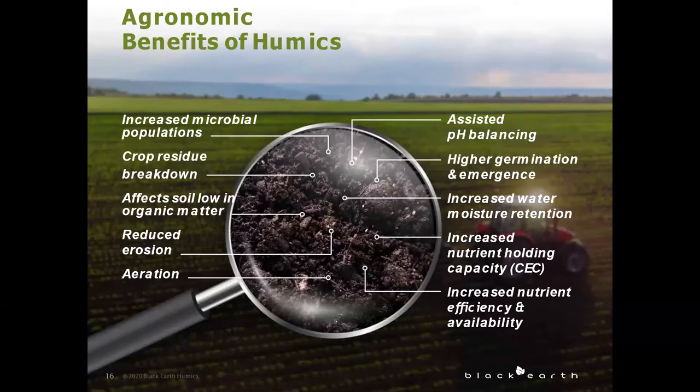Humic helps to increase the cation exchange capacity, which affects many aspects of your soil chemistry. It's used as a measure of soil fertility as it indicates the capacity of your soil to retain several nutrients in plant-available form. This goes hand in hand with its ability to be a great chelating agent, making minerals easily absorbed by the plant.